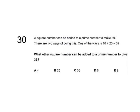Okay, a square number can be added to a prime number to make 39. There are two ways of doing this. One way is 16, which is the square number, and 23, which is the prime number.